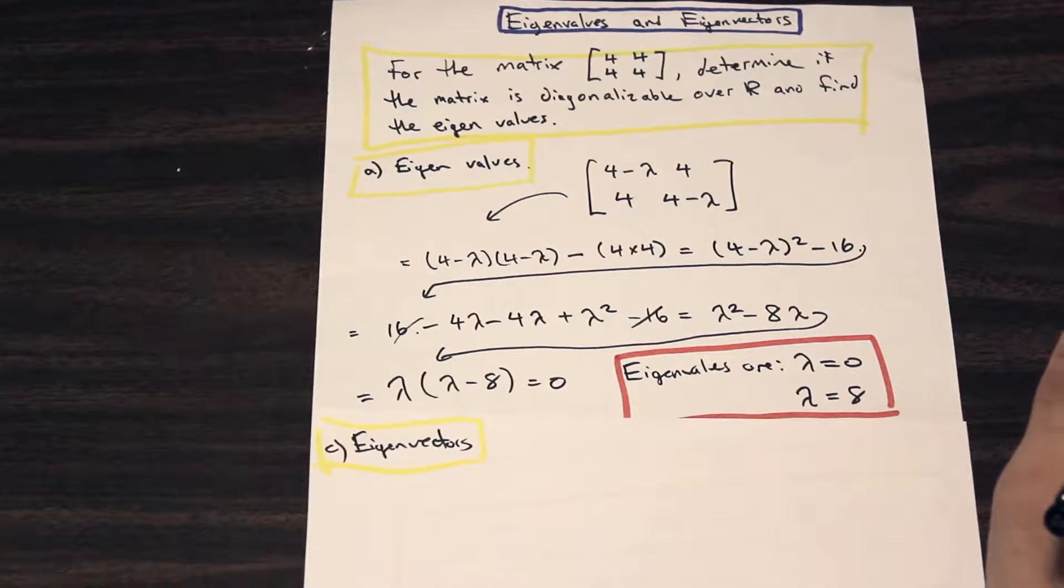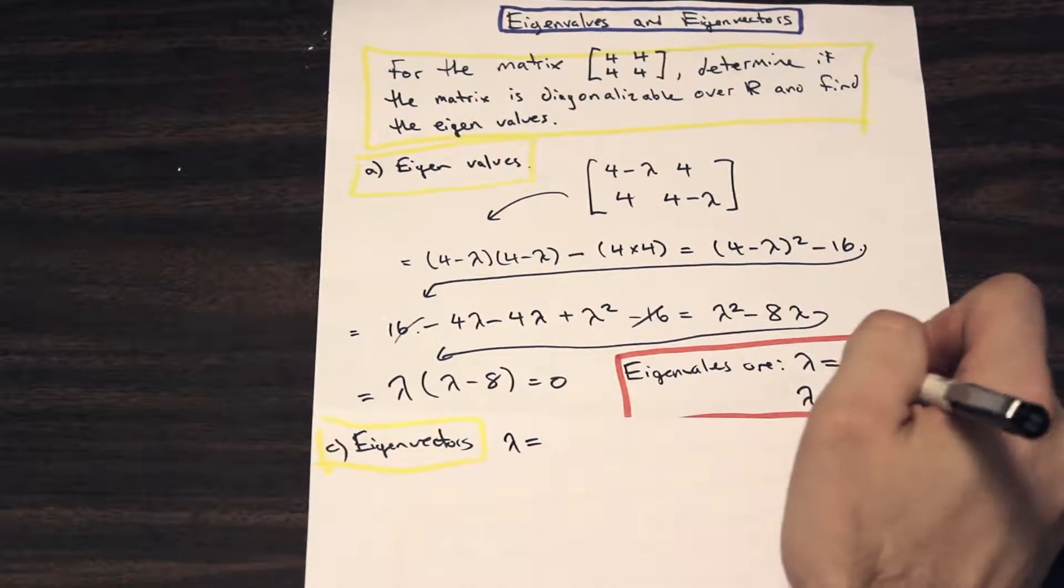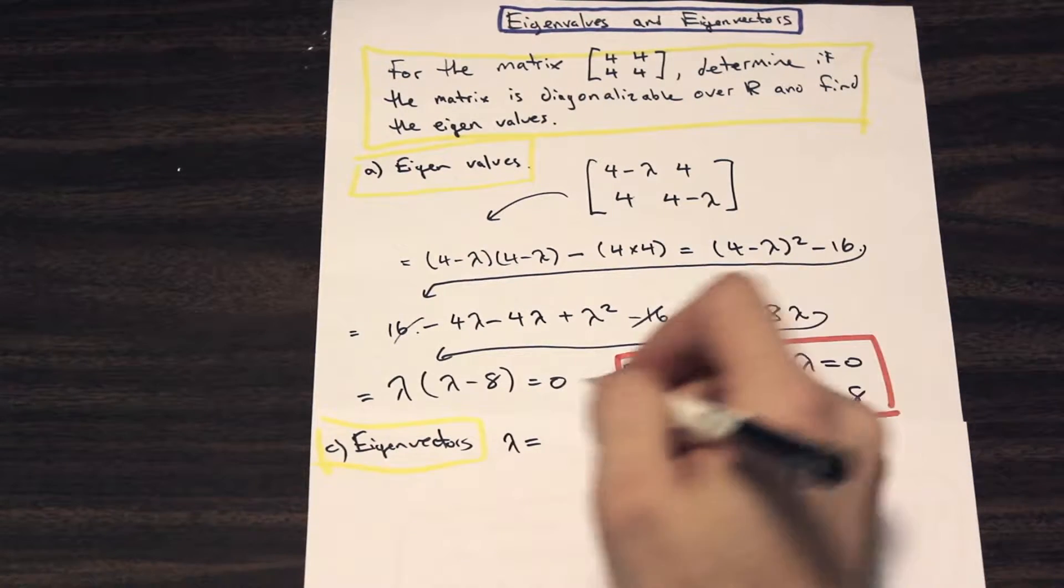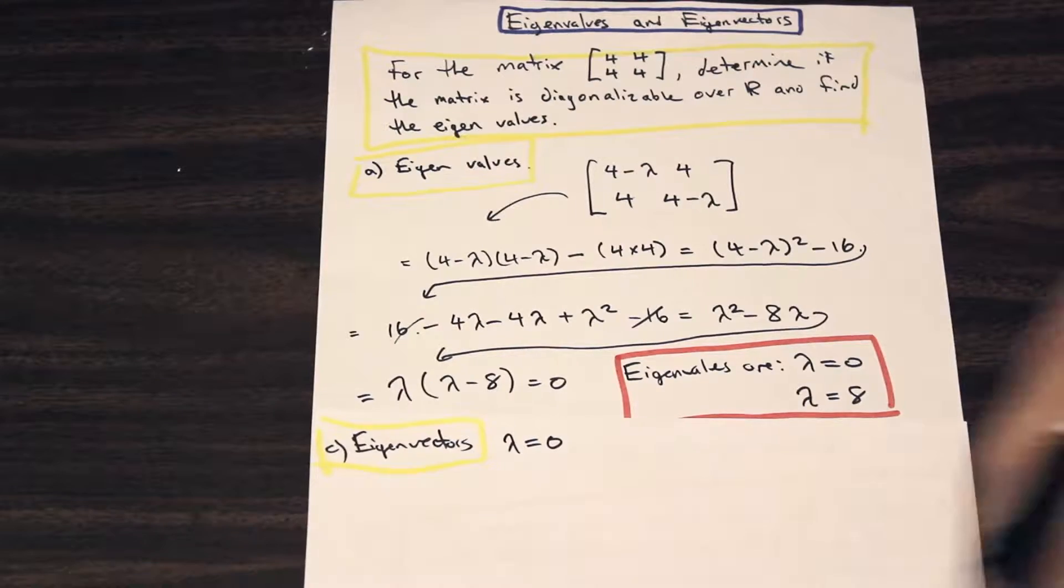So now we're going to solve for the eigenvectors. So what we're going to do, we're going to solve for the eigenvector for both lambda equals 0 and lambda equals 8. So for the first one we're going to start with lambda equals 0.